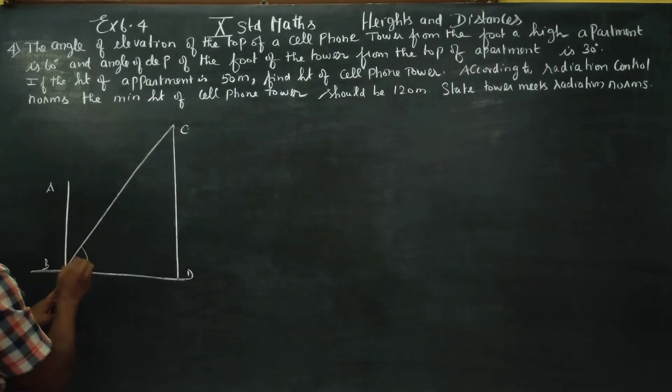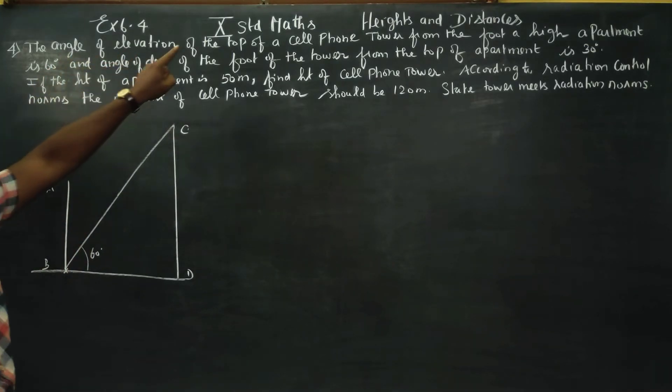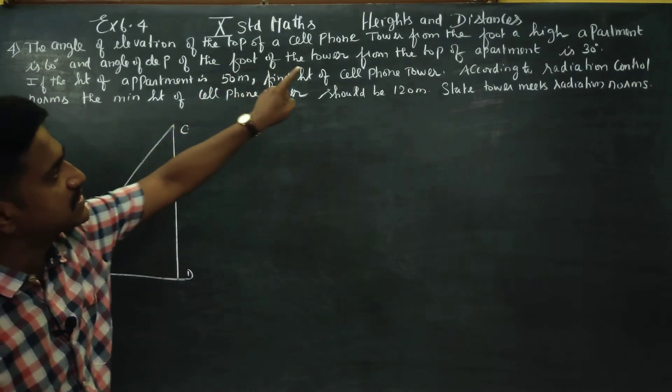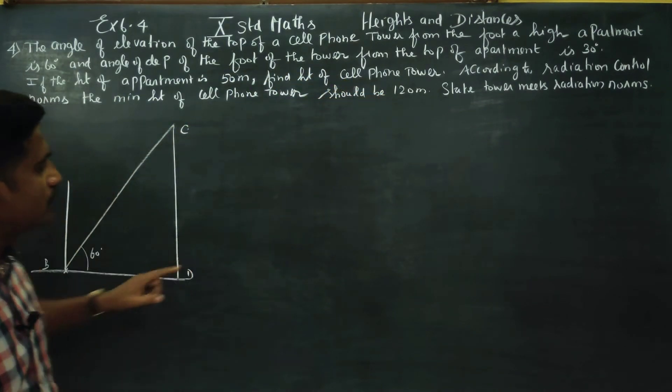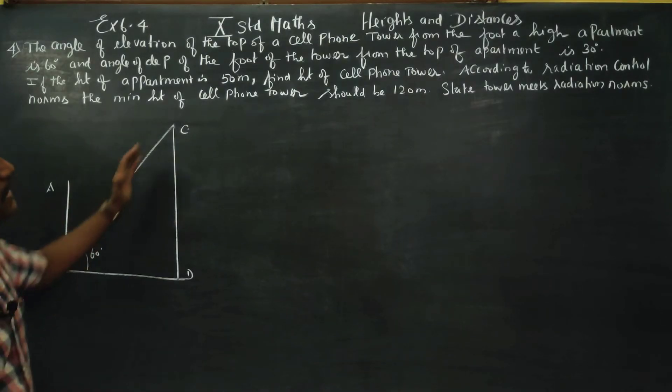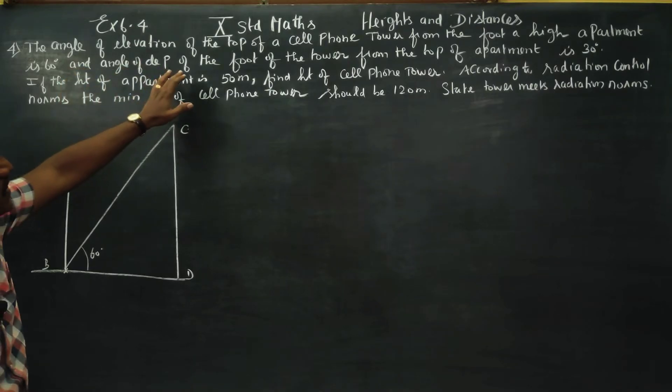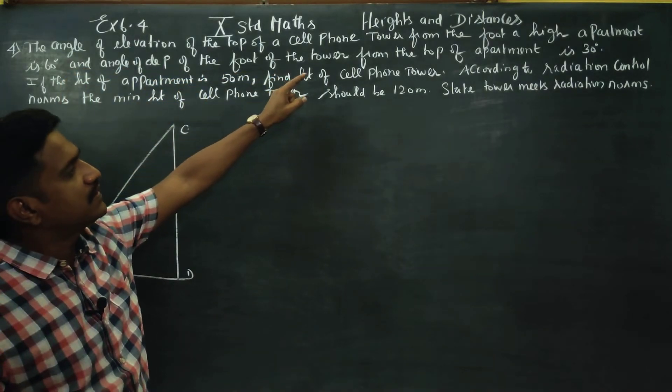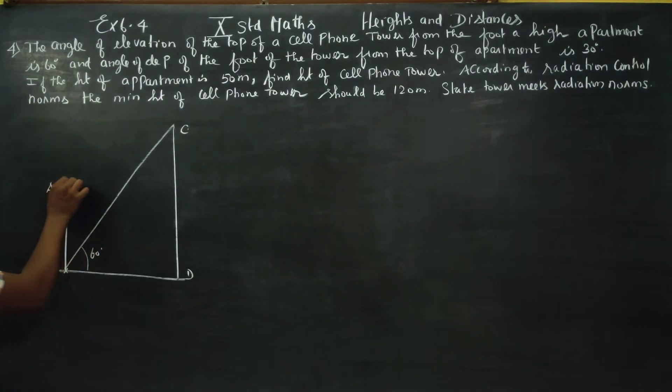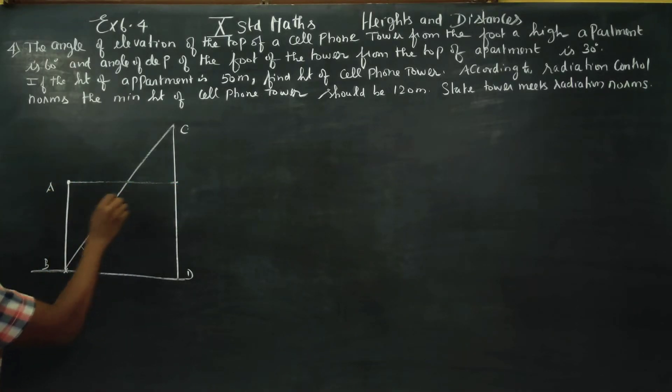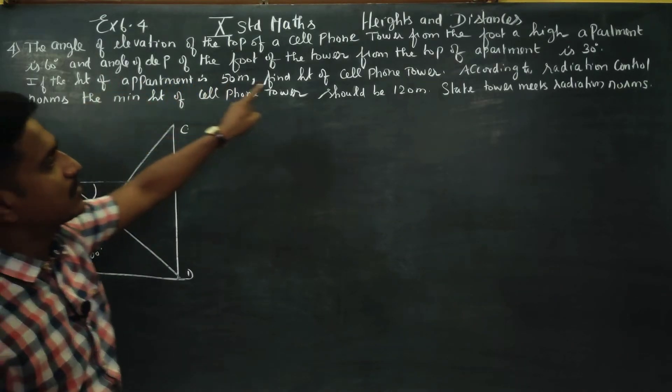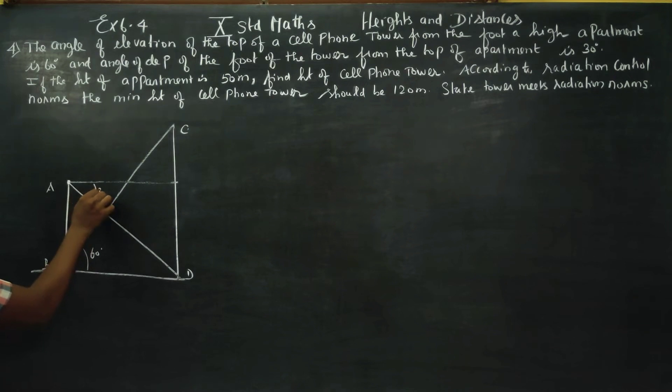The angle of elevation of the top of the cell phone tower from the foot of the high apartment, and on the foot of the tower from the top of the apartment - depression. Depression means the angle when you look down. You see a 30 degree depression.